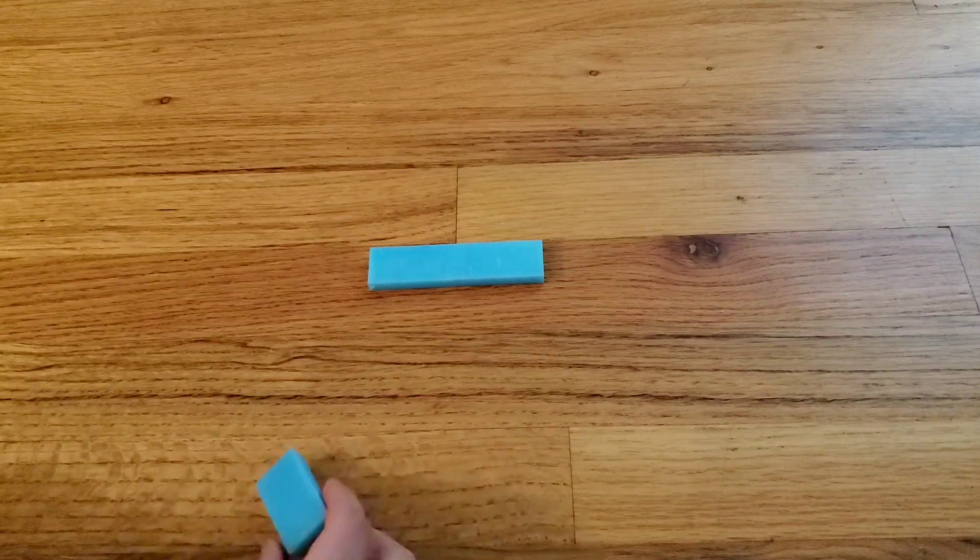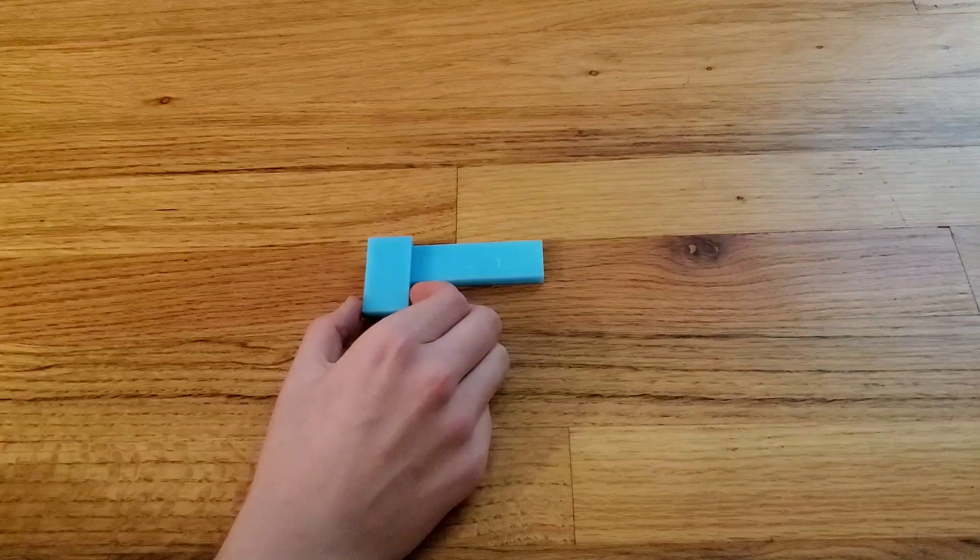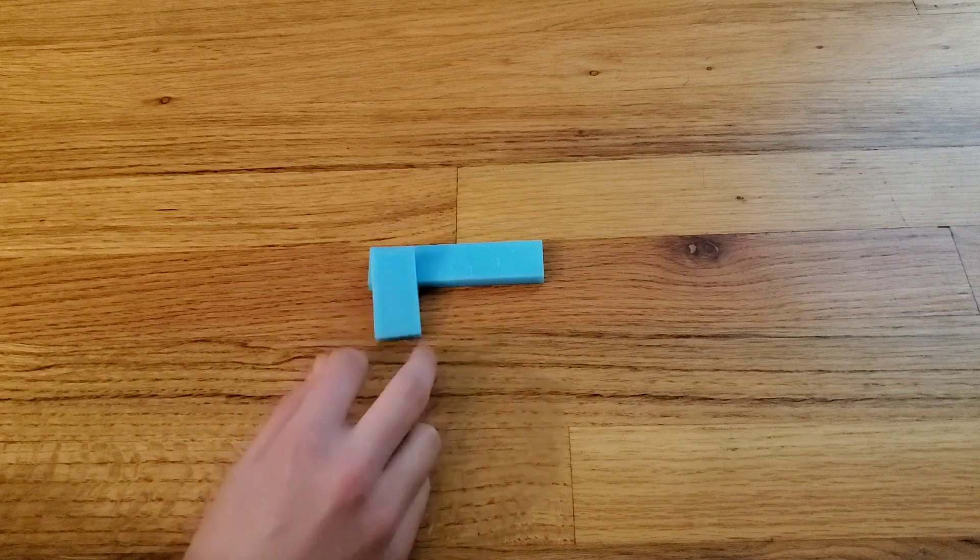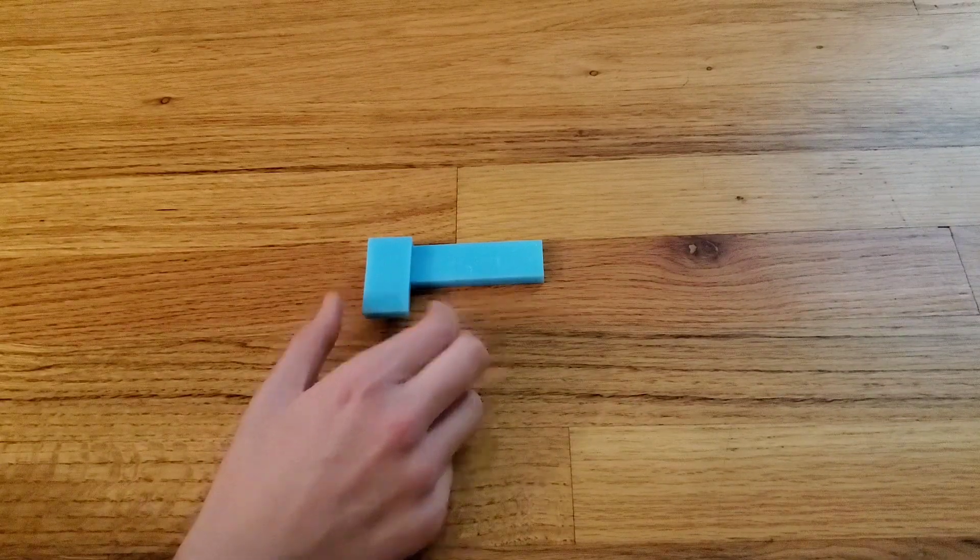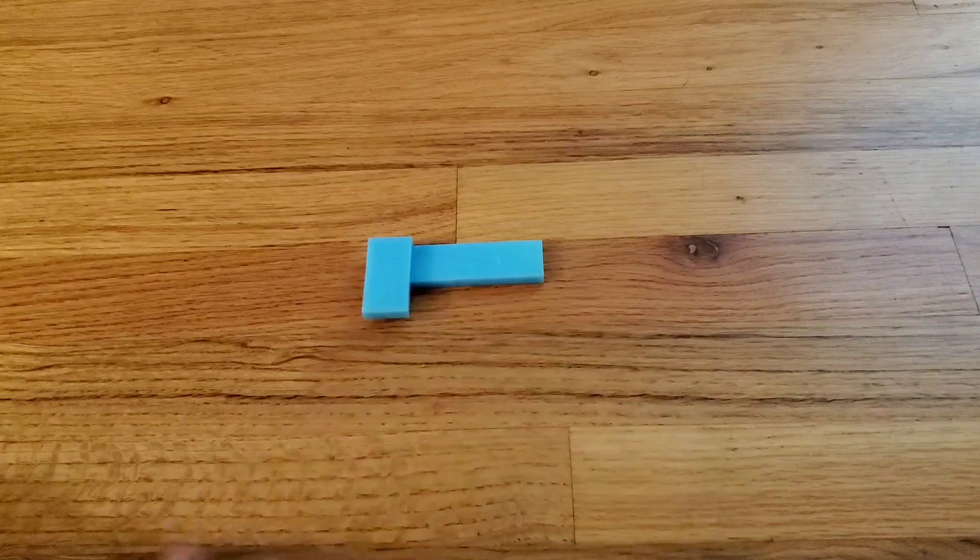Then the second step is to take another ice blue domino and overhang it on this blue domino so that it's overhanging as much as possible without falling off, like that. And this should be on the leftmost side of the two blue dominoes.